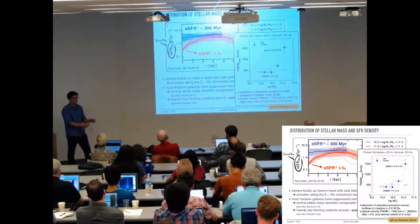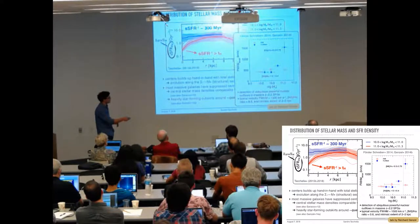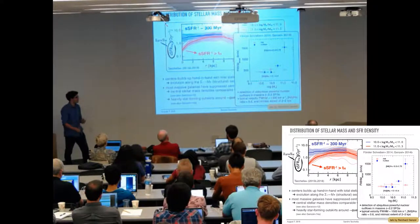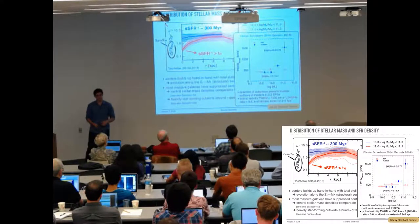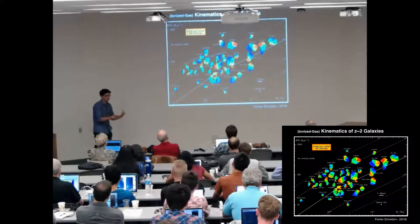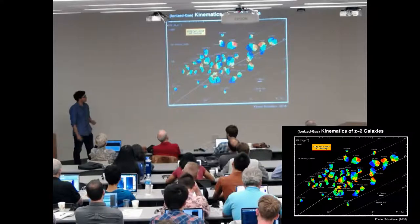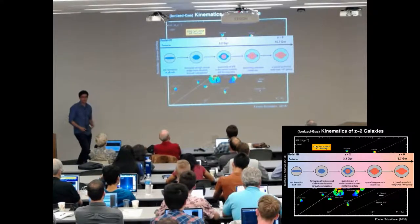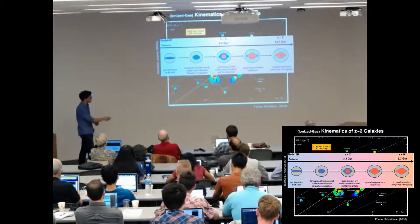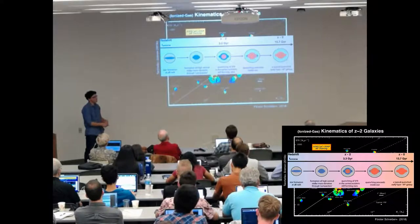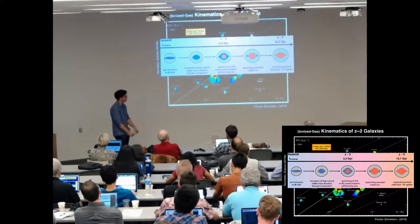When we look at the broad component of H-alpha, we see that for massive galaxies the broad component in the center is much larger than in the outskirts, indicating powerful nuclear outflows possibly triggered by an AGN. The kinematics show these massive galaxies are rotationally supported with V over sigma of roughly five. The picture we came up with is that you build up a very dense center through compaction, then quench from the inside out, forming a typical fast-rotating early-type galaxy.